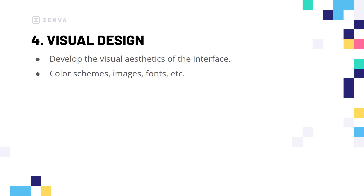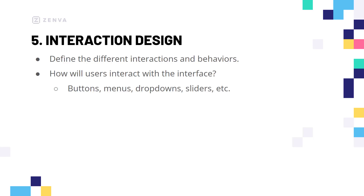Next we have our visual design. The visual design step is where we start developing our visual aesthetic for the interface. This involves everything from color schemes to images to fonts — this is where we actually start implementing the more stylized aspects that you wouldn't include in the wireframe. Once that's done we can then move on to interaction design.